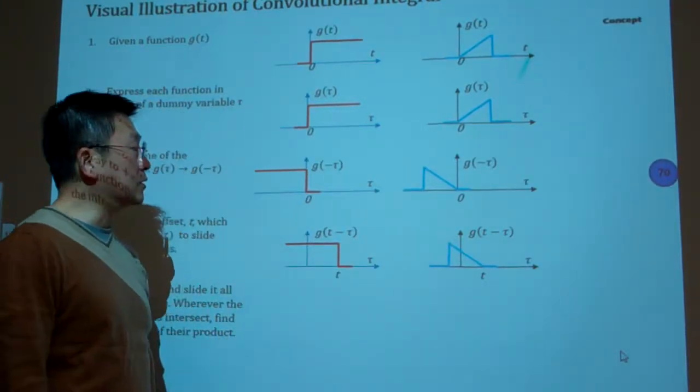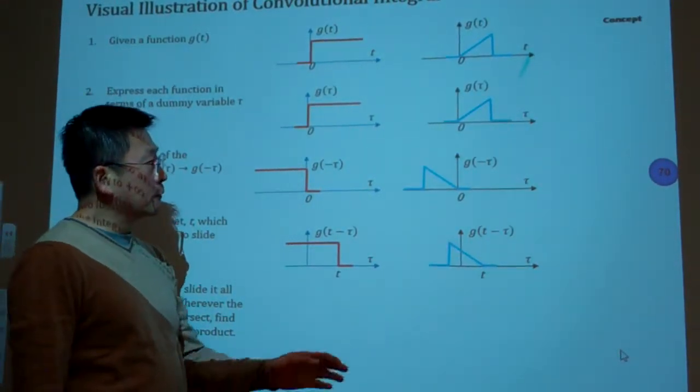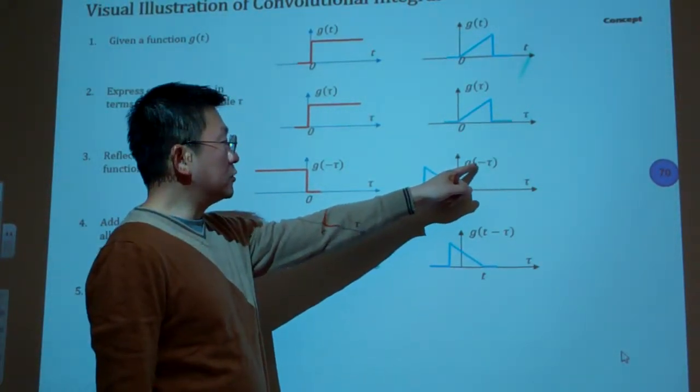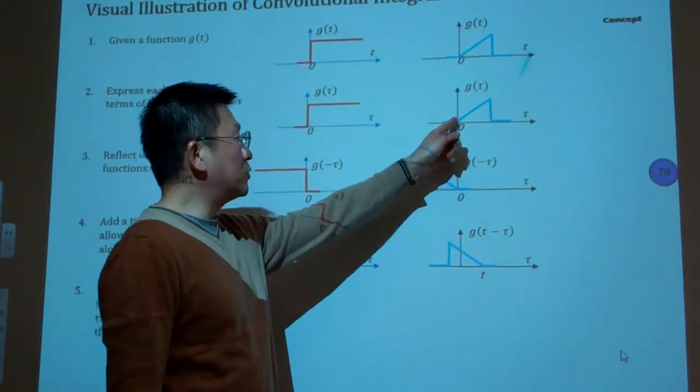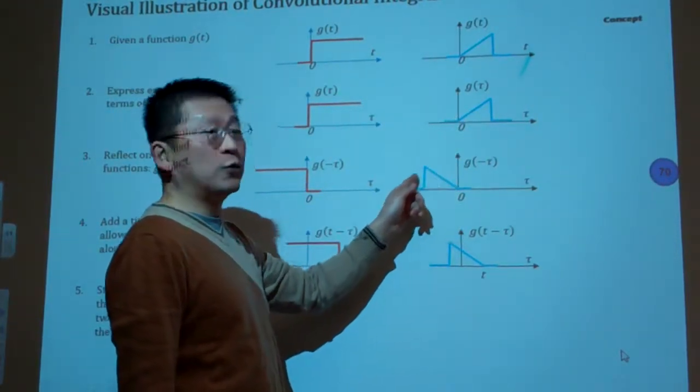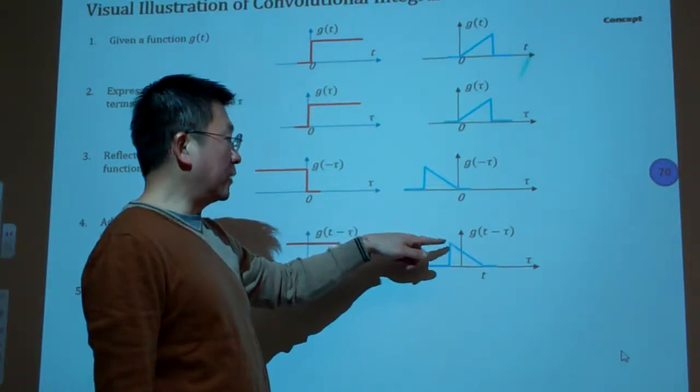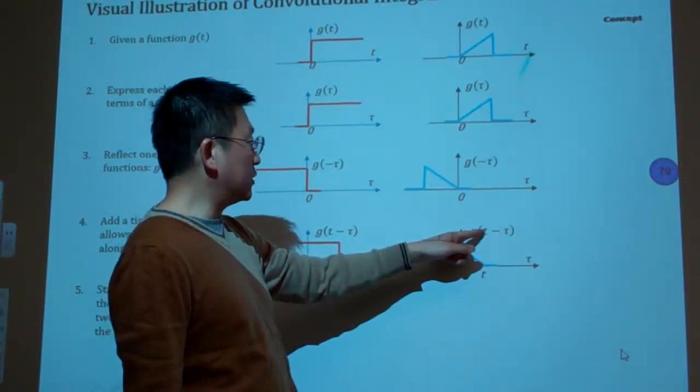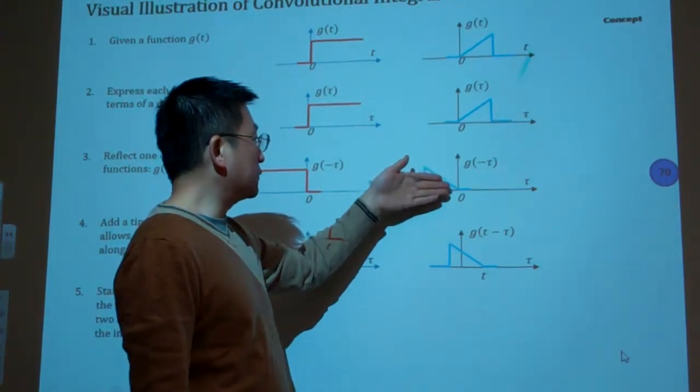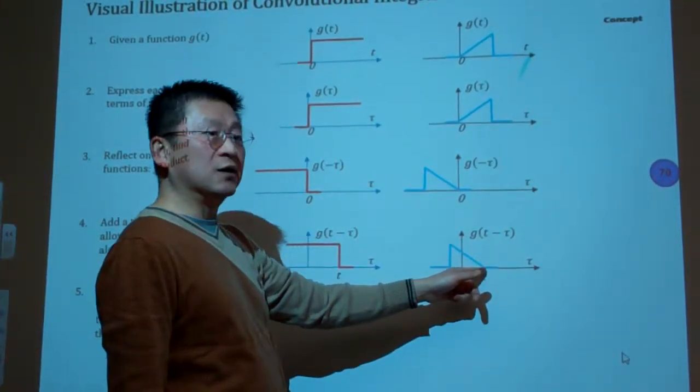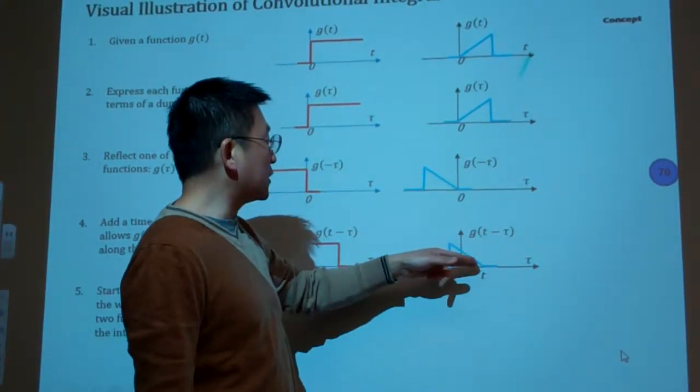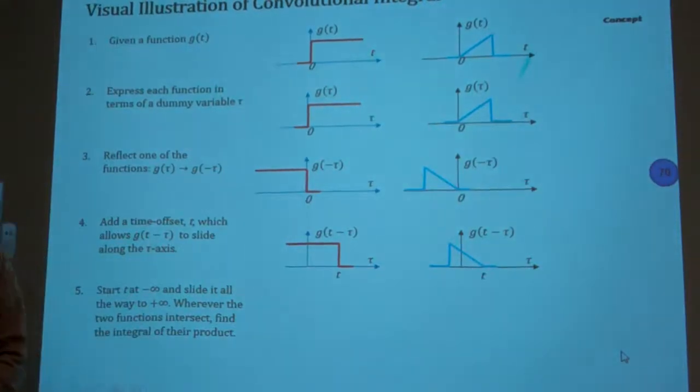And then we want to get to the G of minus tau. Again, we simply reflect this horizontally with respect to time zero. Get this one. And the next step is we simply want to get T minus tau. That means we shift this curve horizontally to featured at T here. So basically from here to here, that is G minus tau here.